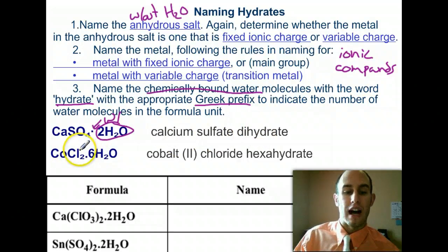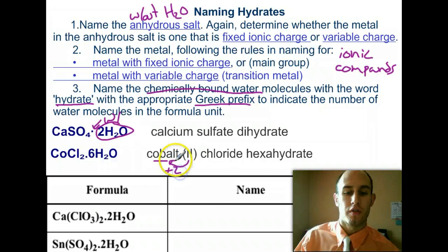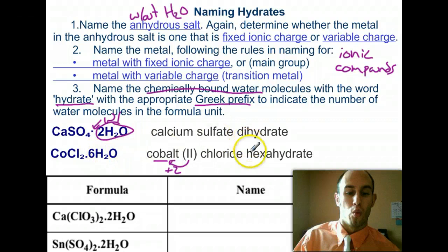Cobalt chloride, and we need our transition metal cobalt to have its Roman numeral number two to indicate that it's a plus 2 charge for cobalt chloride. And then how many waters? With six waters, hexahydrate.